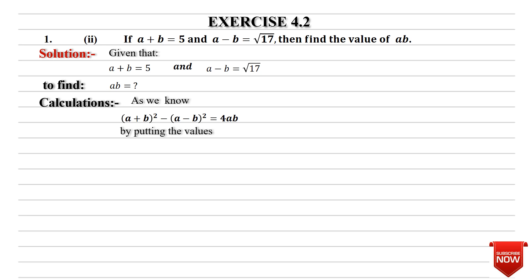By putting the values, 5 square is equal to 25 and after cancellation the root of the square is 17. Now when you minus, 25 minus 17, you will have 8. 8 is equal to 4ab. You can also read this as 4ab is equal to 8.